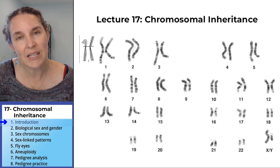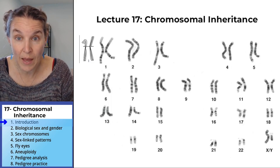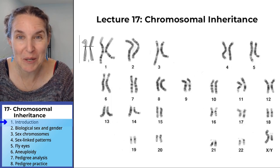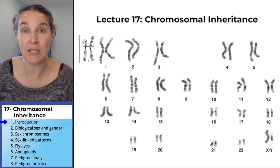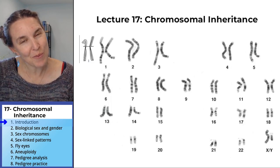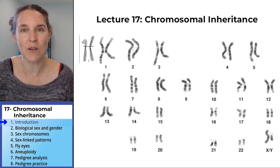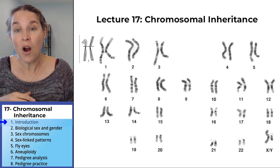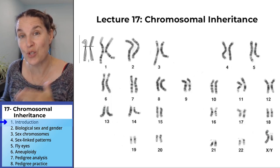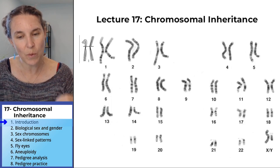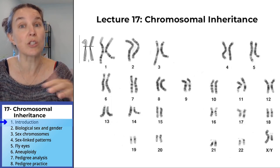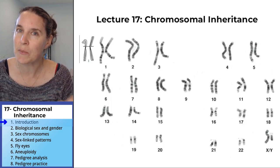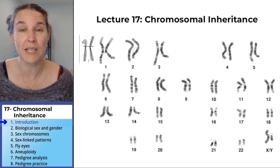Twenty-two pairs of our chromosomes are autosomes, and we all have two copies of every autosome. The last pair of chromosomes are sex chromosomes, and for humans the possibilities are X chromosomes and Y chromosomes. There are heritable traits that are related to the X and Y chromosomes. The purpose of this lecture is to look at some of the inheritance patterns overall related to chromosomes, but in particular to look at some of the inheritance patterns related to the sex chromosomes, the X and the Y chromosome.